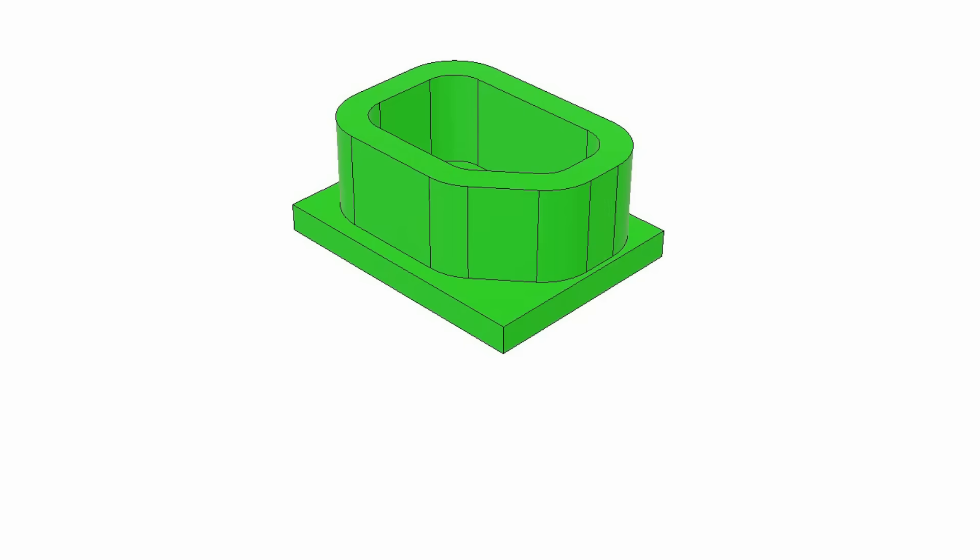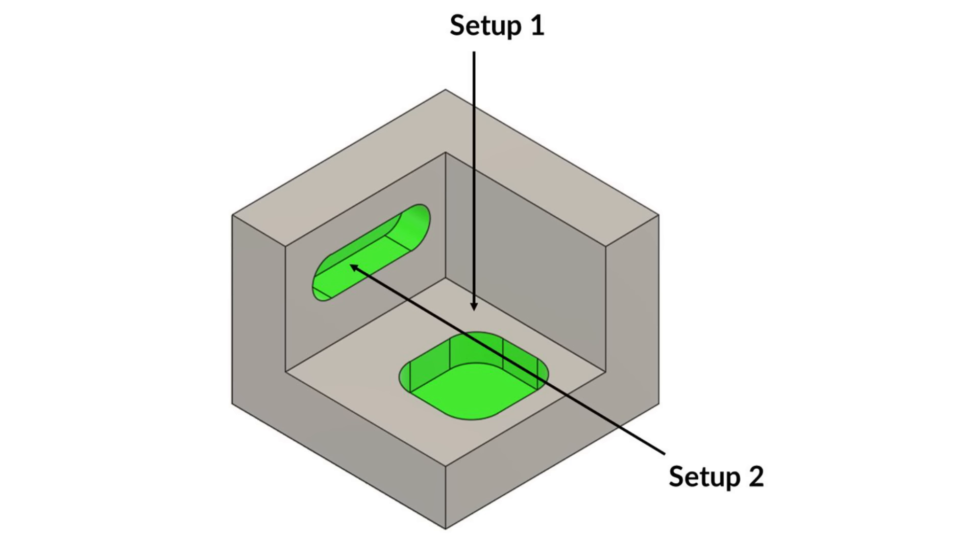Every time the part is clamped to the vise and located, this is known as a setup. Reducing the number of setups decreases machining time which makes the part more cost effective. Reducing the number of setups increases part accuracy as features made in the same setup are made nearly as accurate as the CNC is made, which is quite good.